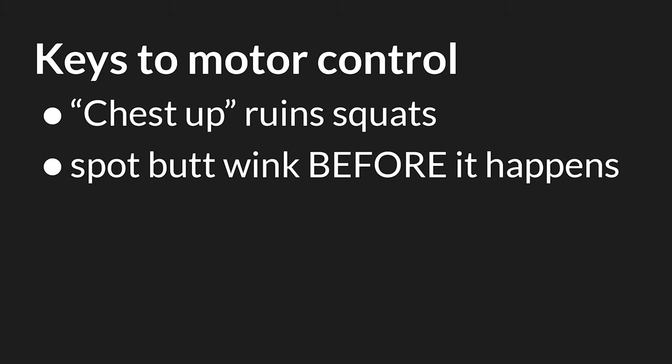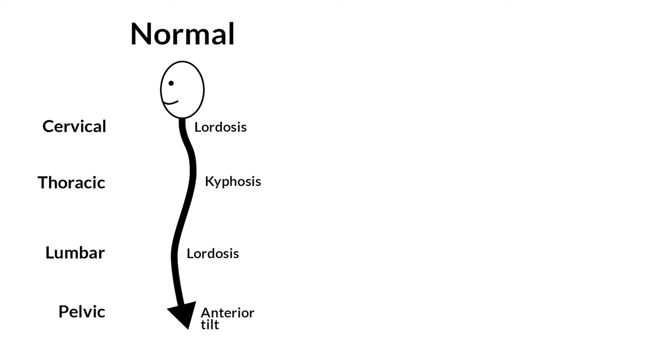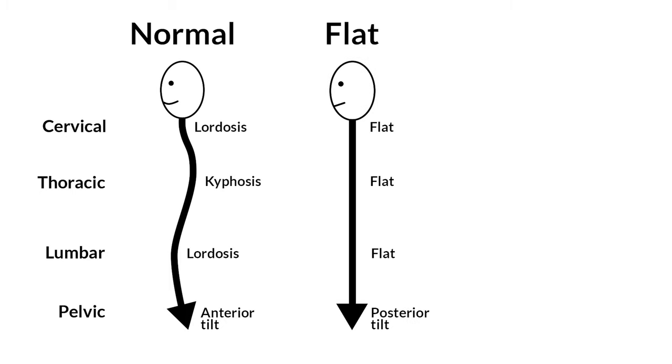After a decade or so of coaching, I can spot butt wink before it happens with roughly 90% accuracy just by watching a lifter set up for the squat. We stabilize our joints by compressing them with gravity or muscle contraction. Ideal spinal mobility occurs in neutral at rest, or possibly with a slight flattening of the spine when under load.